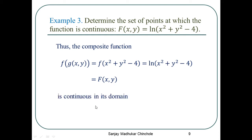What will be its domain? The domain is the set of all ordered pairs (x,y) ∈ R² such that x² + y² - 4 > 0. Therefore, the function F is continuous in this set.